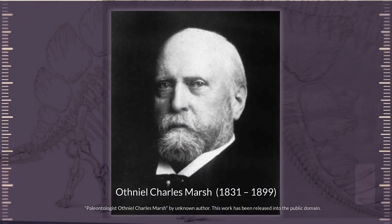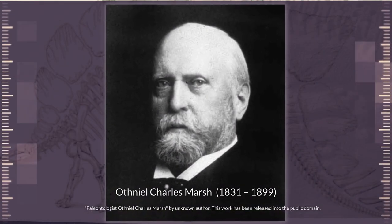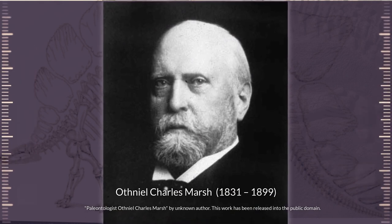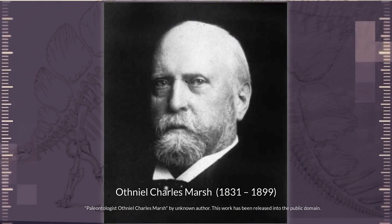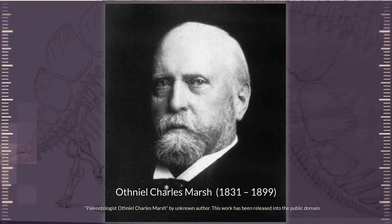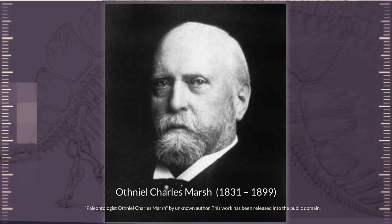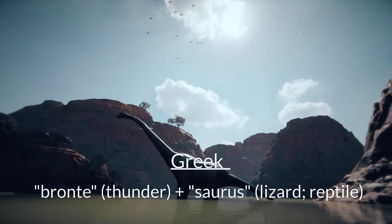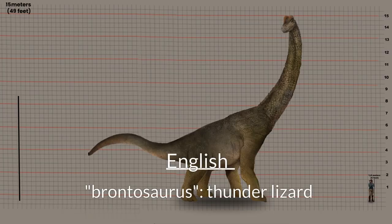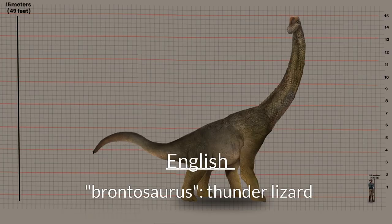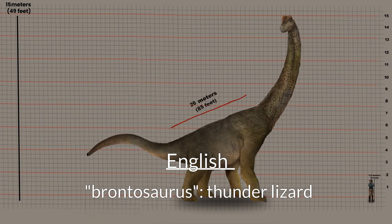One such dinosaur is the brontosaurus. Coined by American paleontologist Othniel Charles Marsh in 1879, the brontosaurus consisted of two Greek roots — namely bronte, meaning thunder, and saurus, meaning lizard or reptile. Together, they describe a thunder lizard that reflects the massive size of the creature and evokes the sound that it would have made as it moved.